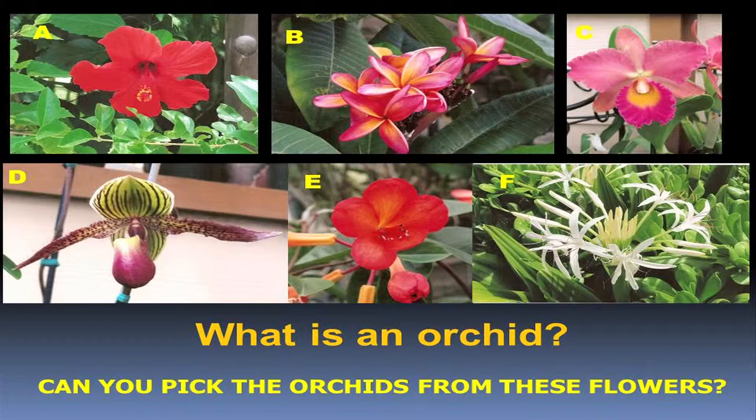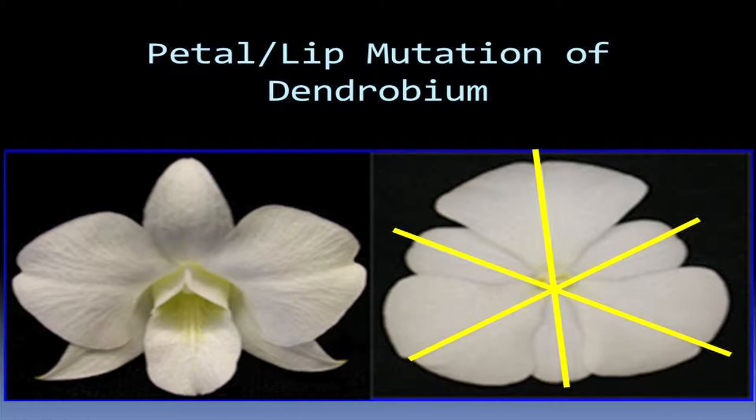Can anyone tell me why? Bilateral symmetry — yes. Anything else? A lip — okay, you got it. They are orchids because they exhibit bilateral symmetry, which means if you cut them right down the middle it'll be the same on both sides. And they have this funky looking organ called a lip.